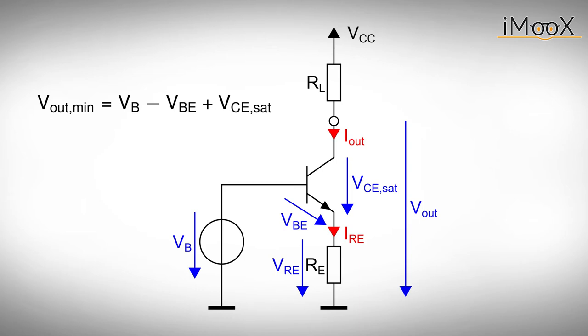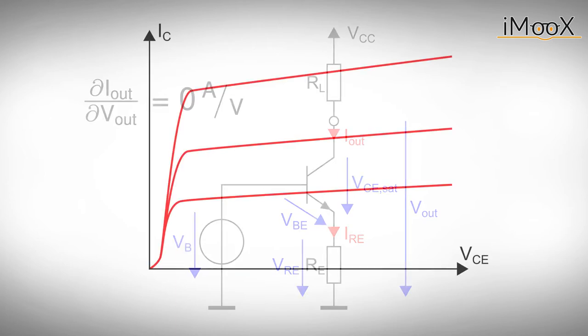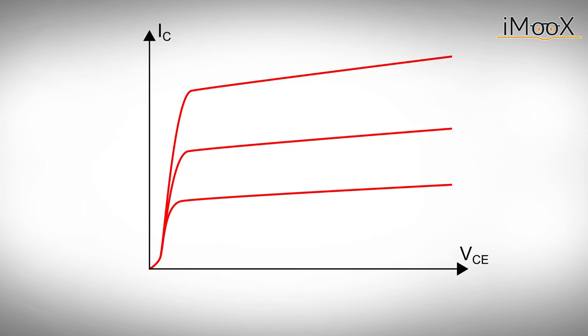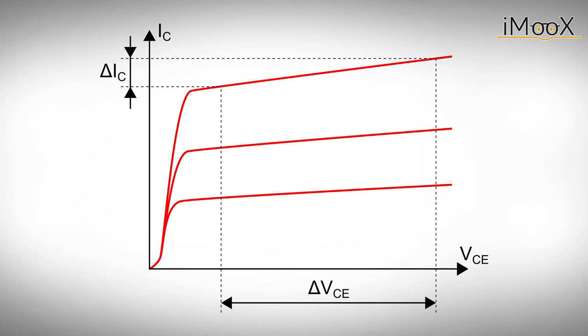Besides the minimum output voltage, another crucial quantity for our current source is output current stability. We could ask how much the output current changes when we manipulate the applied output voltage. Of course, we want this change to be as small as possible. Part of this change can be seen in the output characteristic of our bipolar transistor. If the collector emitter voltage changes, so does the collector or output current.